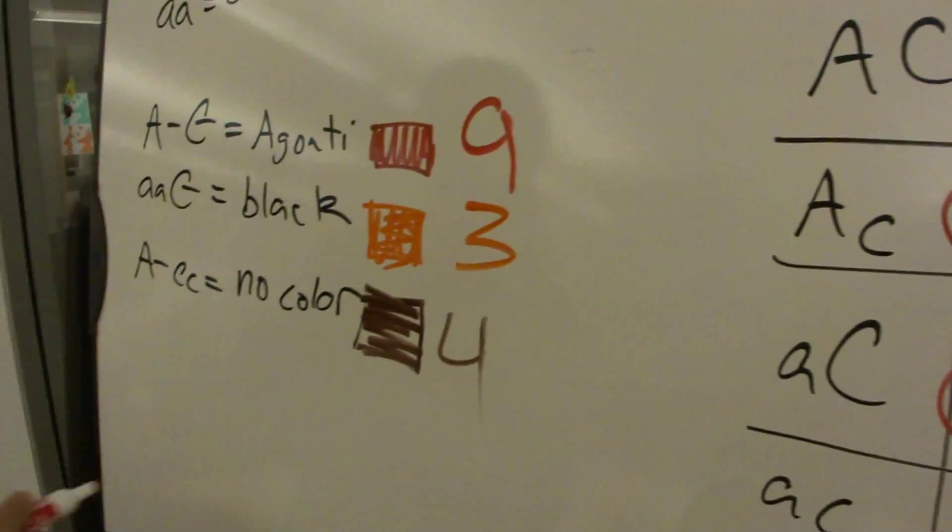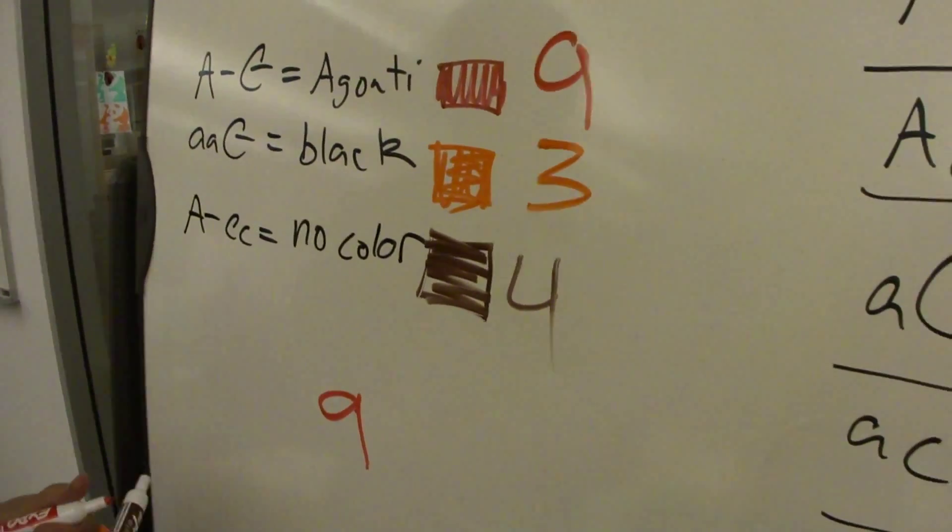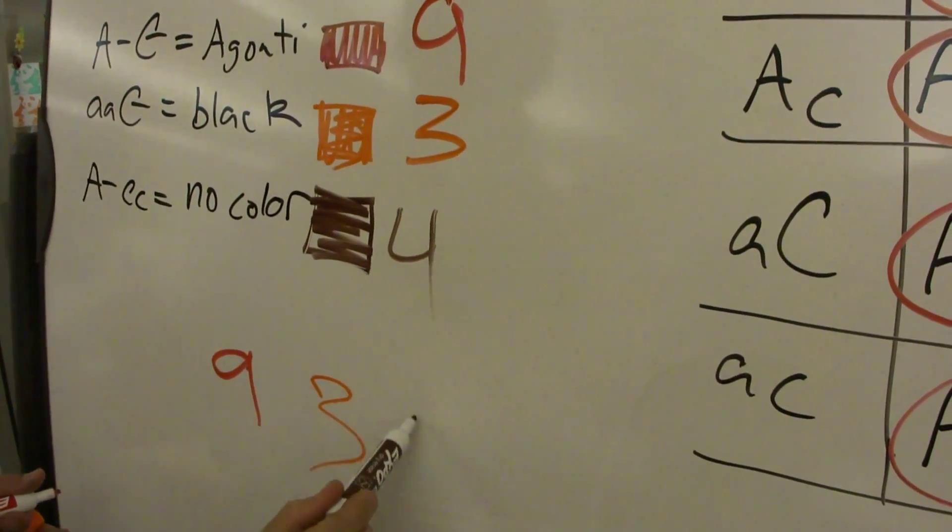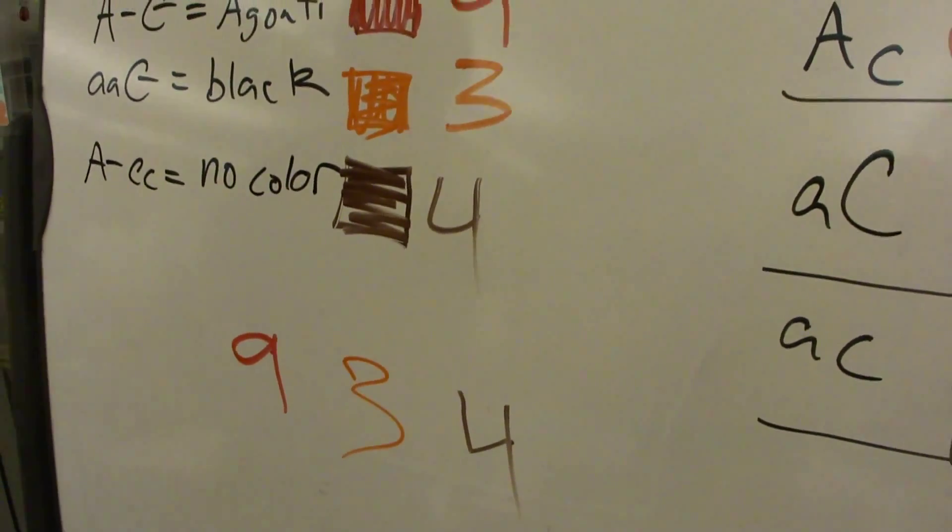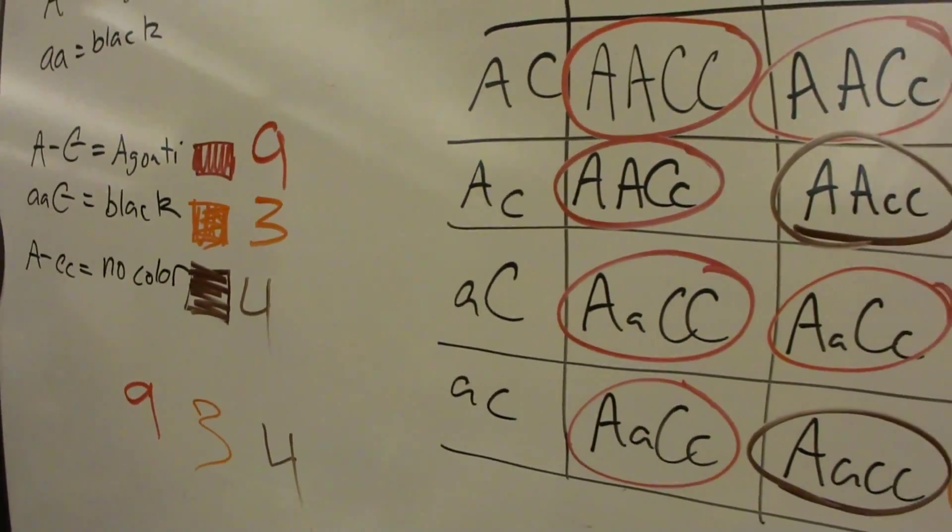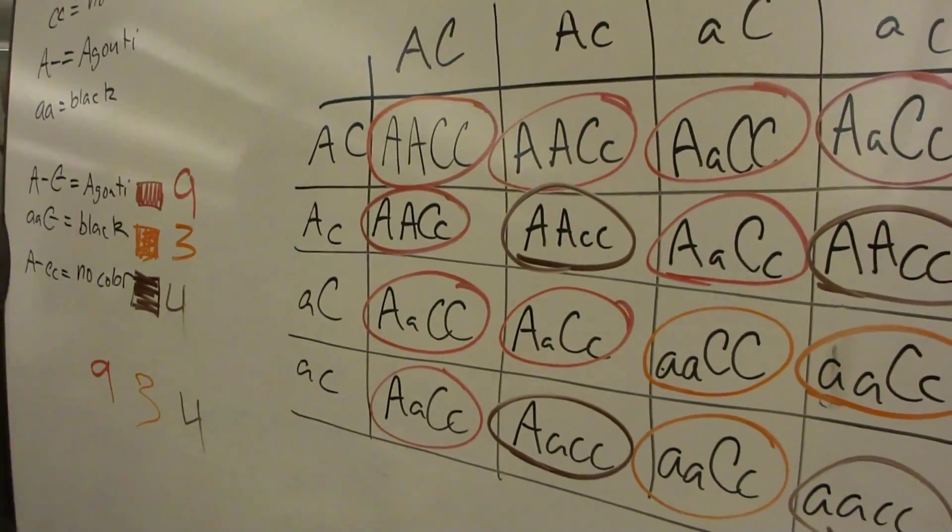Okay. So we ended up with a nine to three to four ratio. And what does that tell us? Recessive epistasis. Yes.